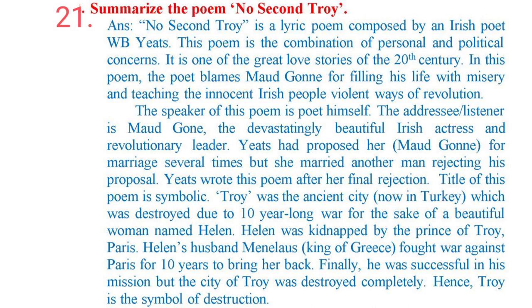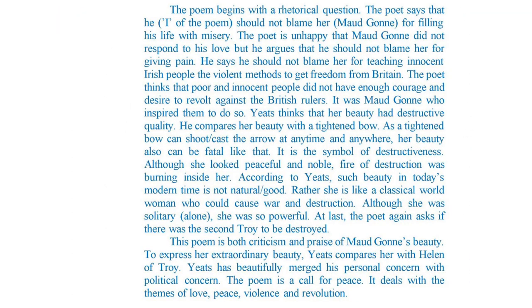The title of this poem is symbolic. Troy was the ancient city, now in Turkey, which was destroyed in a ten-year-long war for the sake of a beautiful woman named Helen. Helen was kidnapped by Paris, prince of Troy. Helen's husband Menelaus, king of Greece, fought war against Paris for ten years to bring her back. Finally, he was successful but the city of Troy was destroyed completely. Hence, Troy is the symbol of destruction. The poem begins with a rhetorical question.